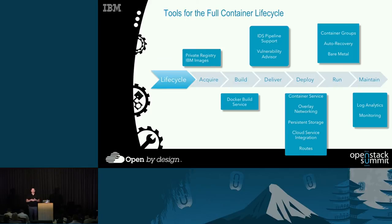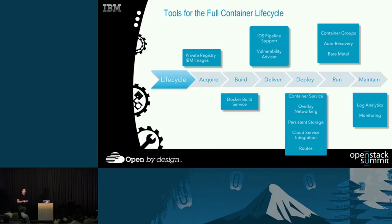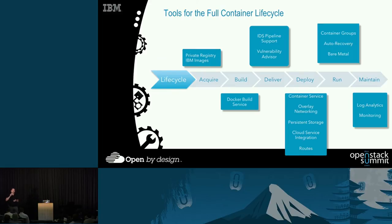Step two in the lifecycle is building your new Docker images. You take a base image, add your application, and build it. You can do that locally on your laptop using Docker Build, but we also provide a cloud-hosted service that does Docker Build for you. You build your Dockerfile, run a remote build in the cloud, the build resources are managed for you, and the resulting image is pushed automatically into your private registry.